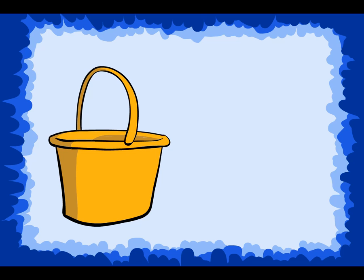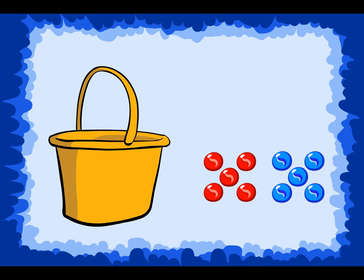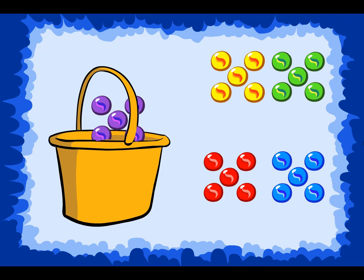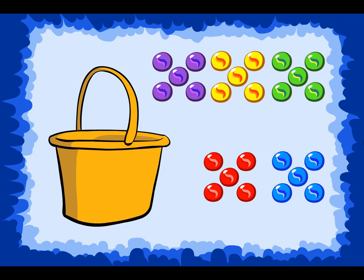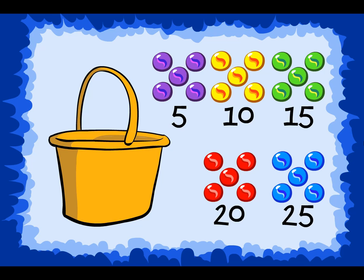There are 25 marbles in the bucket: 5 red ones, 5 blue ones, 5 green ones, 5 yellow, and 5 purple. So if we count by 5's, we can figure out the total. Count with me: 5, 10, 15, 20, 25 marbles in total.